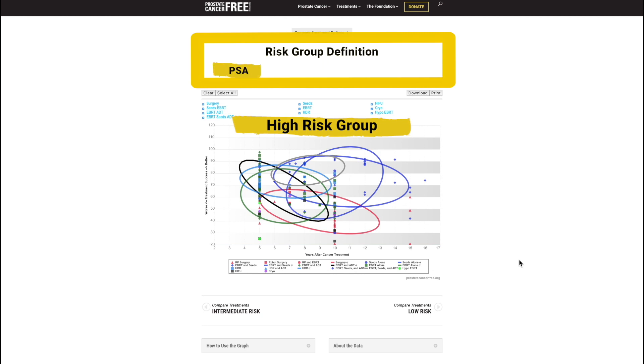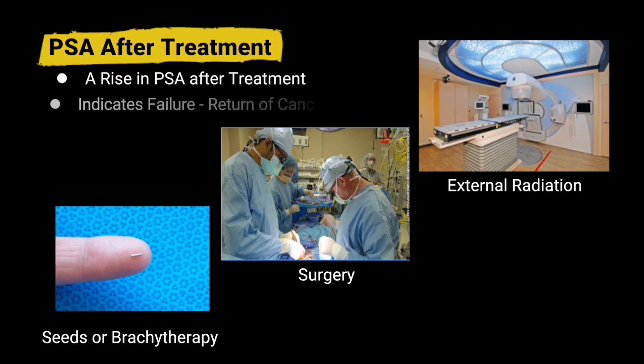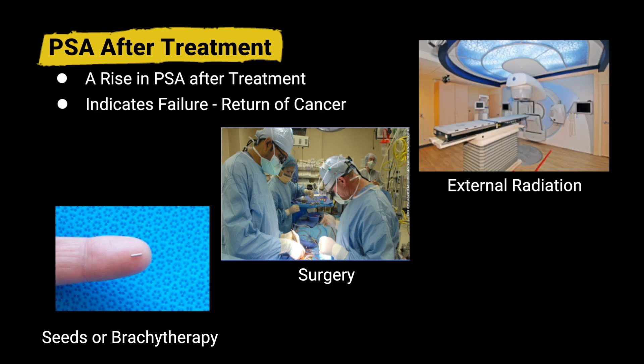Your test results for PSA, Gleason score, and stage will guide you to the correct risk group. The interactive graph uses the percentage of patients with no rise in PSA to measure treatment success. The PSA test is our most sensitive and most effective test for the early detection of prostate cancer. After any treatment, the PSA can be used to determine whether the treatment has been successful. A rise in PSA following treatment can indicate that the treatment has failed. A successful prostate cancer treatment is therefore one in which the PSA has not progressed and has not risen over the lifetime of the patient.